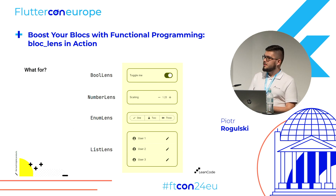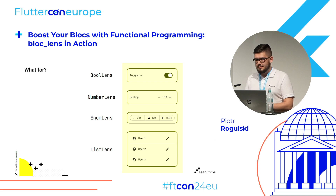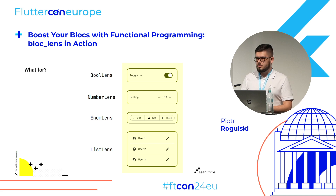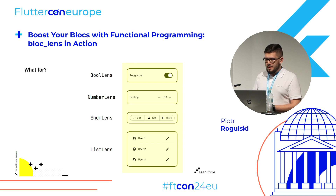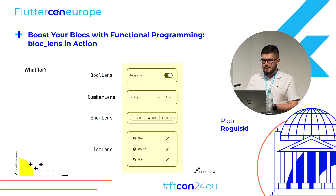So what can you build with these? Those are some examples of controls you can build very easily using lenses. Switches are a prime example because they are for toggling settings. Scaling — like plus and minus buttons — is for managing numbers, so it's only logical to use a NumberLens. Segmented buttons or dropdowns are for an EnumLens because it only allows you to select one of a few options. And if you have a list of objects — like users, books, or favorites — and you want to edit each of those values specifically, the ListLens allows you to modify each of the values.